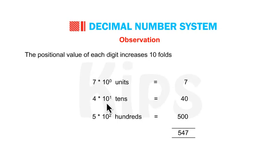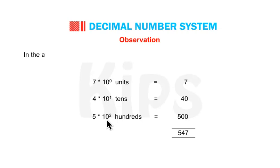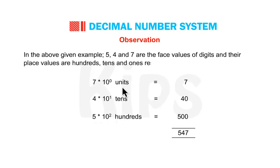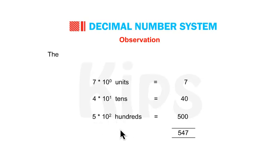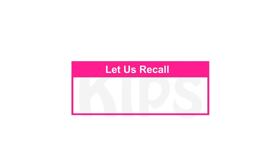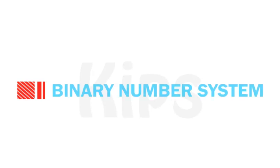From this we observe that the positional value of each digit increases 10-fold as we move from right to left. In the above example, 5, 4, and 7 are the face values of the digits, and their place values are hundreds, tens, and ones respectively. The face value depends on the position of the digit in the number. Students, can you quickly recall which number system we use?